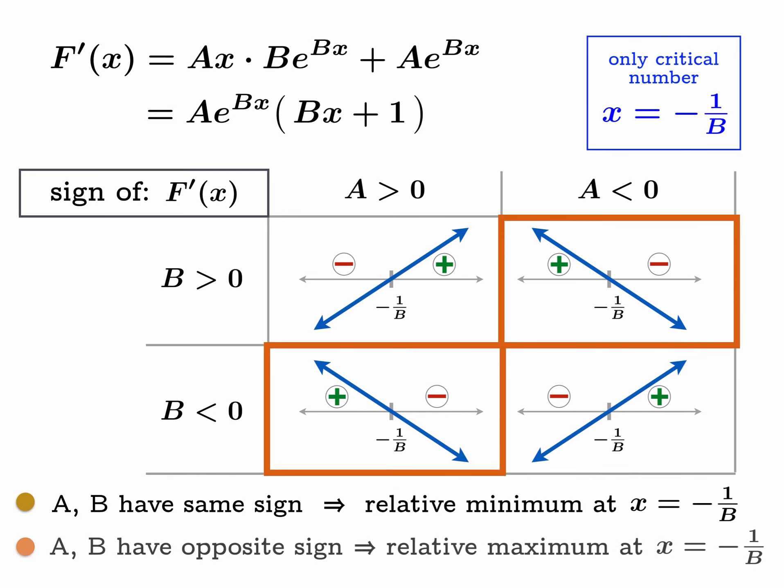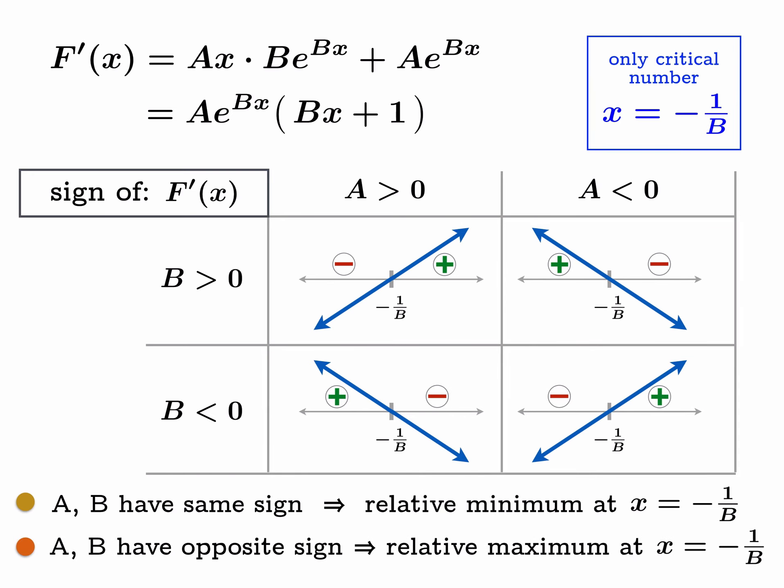That is our analysis of the problem. We've completely decomposed this problem. We can say with confidence that if A and B have the same sign, then there is a relative minimum at negative one over B. If A and B have opposite signs, there's a relative maximum at negative one over B. There's our answer. We broke what seemed to be a very complicated question into a sequence of much simpler questions.